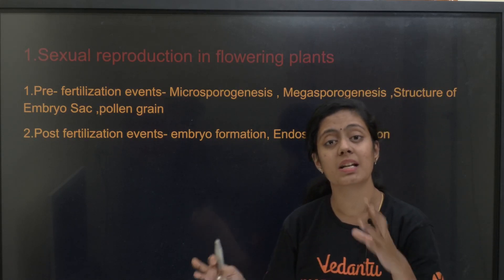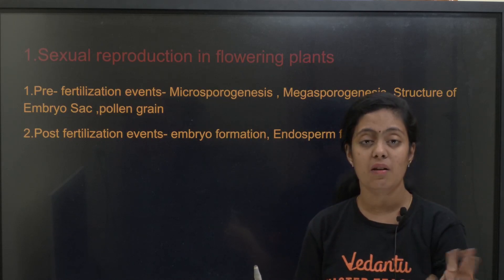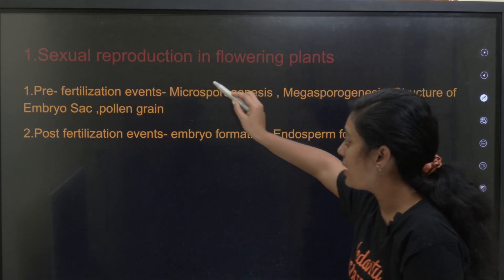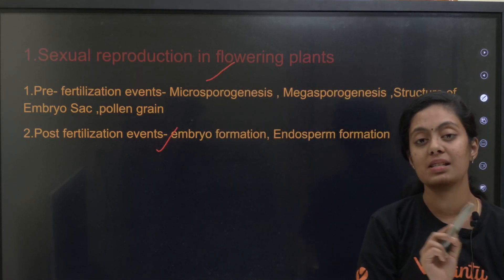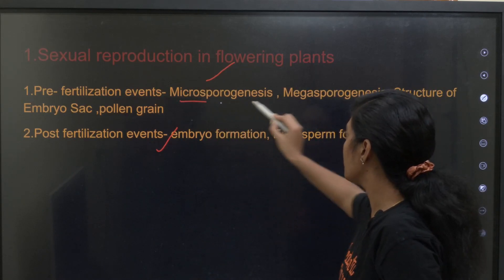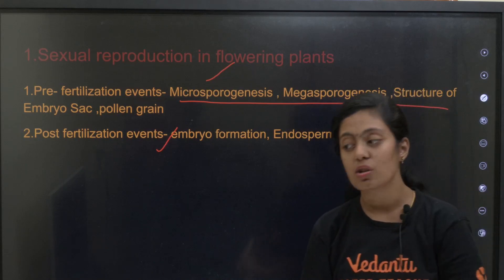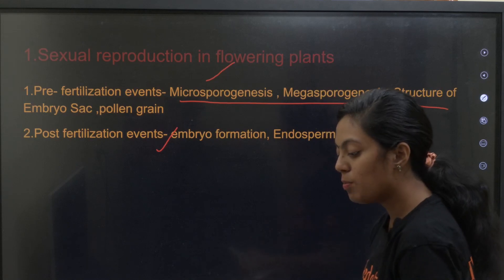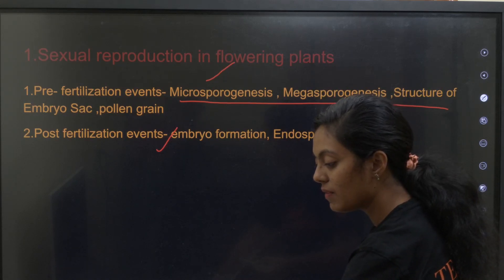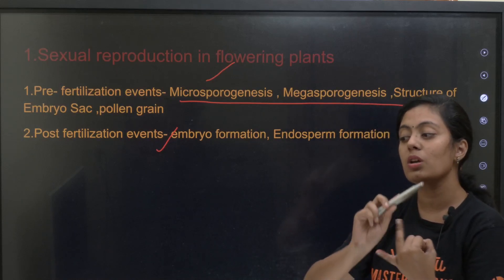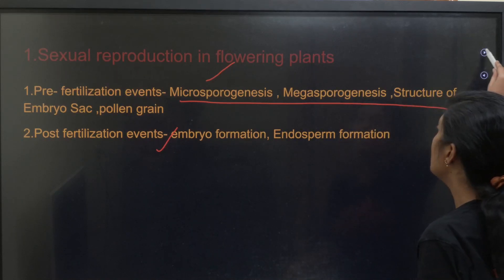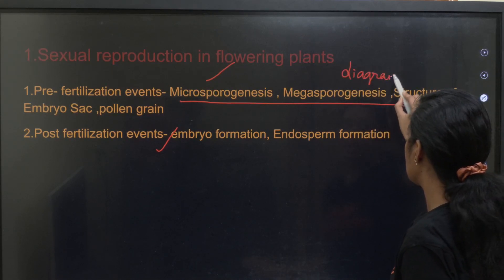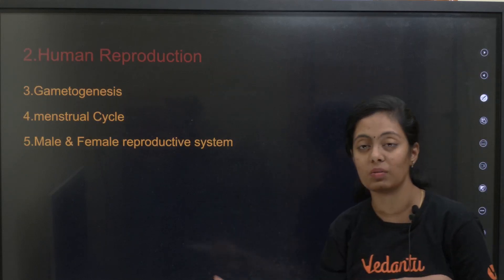First, you have sexual reproduction in flowering plants. There you have pre-fertilization and post-fertilization events. In pre-fertilization events, you will study microsporogenesis, megasporogenesis, structure of embryo sac, and pollen grain. In post-fertilization events, you will study embryo formation and endosperm formation. Diagrams are very very important from this topic. Important diagrams are already covered — you can check the playlist.